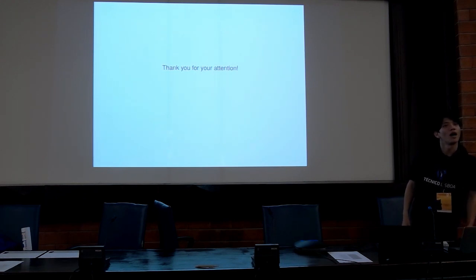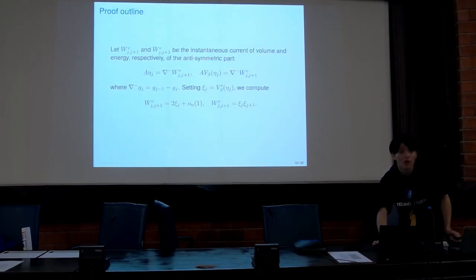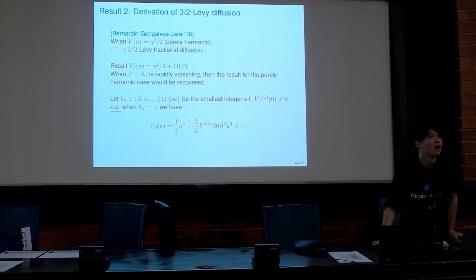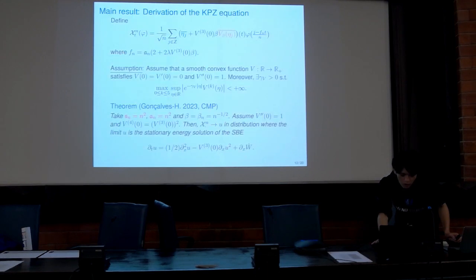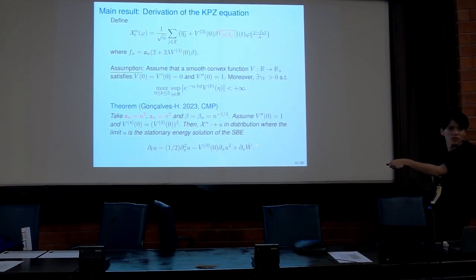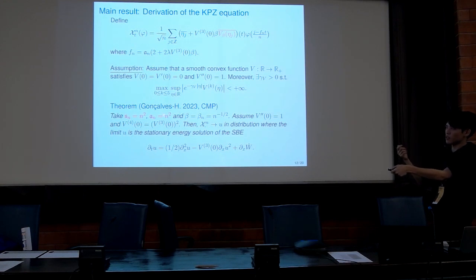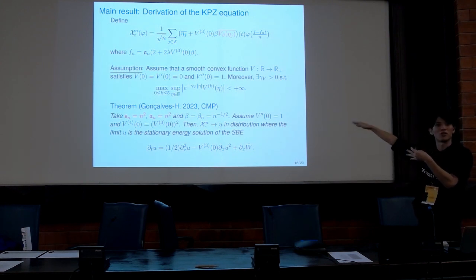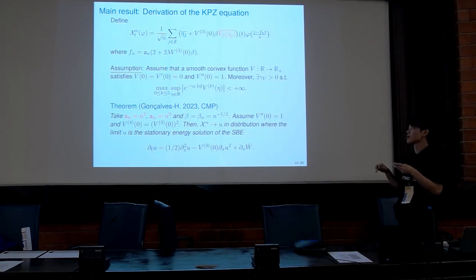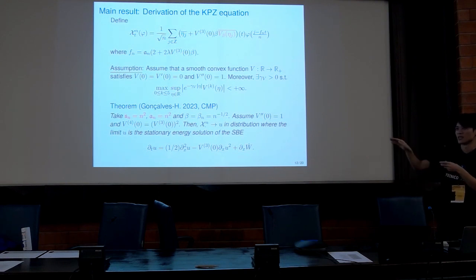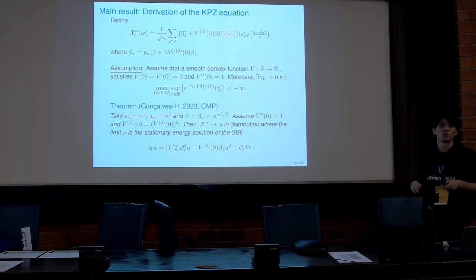Yes, it's technical. For example, you might expect that if this condition doesn't hold, you would still get KPZ. If the condition isn't satisfied, there is an additional drift term proportional to the derivative of u, which is a linear part. The coefficient is given by this minus that. We didn't know how to characterize this drift term macroscopically, so we imposed this technical condition to rule out that possibility. But I believe we can characterize this term with some additional techniques.